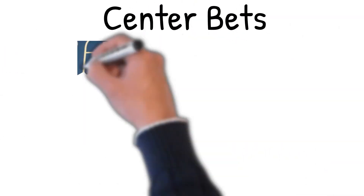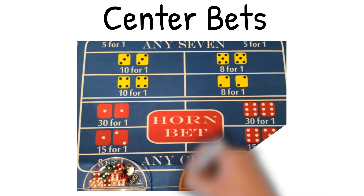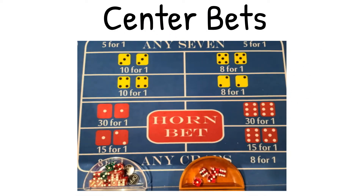Today we're covering center bets. That includes the Any Seven, the Hard Ways, the Horn bets, the Any Craps, and the components that make up the Horn bet: the two, the three, the eleven, and the twelve. We're also going to cover the Hop bets.